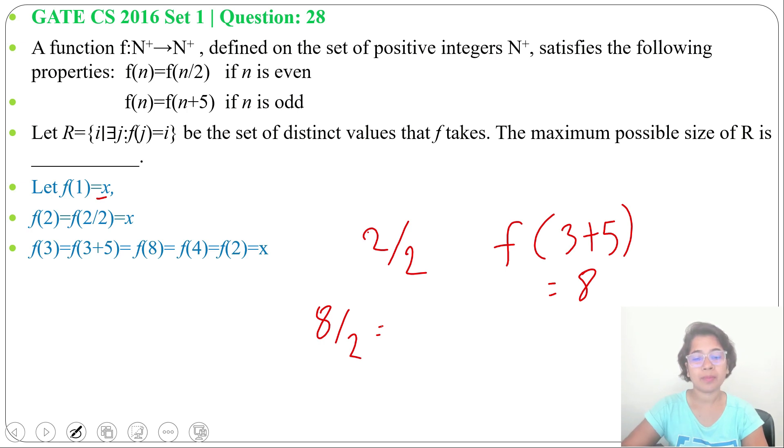Then again, 4 is an even number, so f(4/2). 4/2 will be f(2), and f(2) we already found is x. So f(3) is also x. Now f(4) - we already found f(4) equals f(2), which equals x.